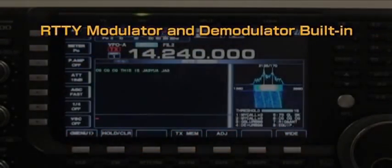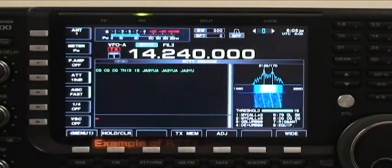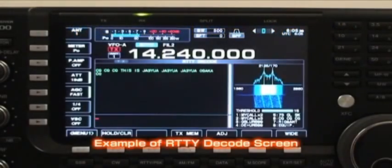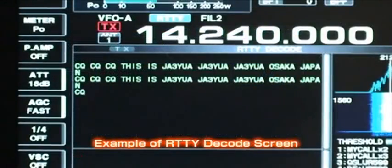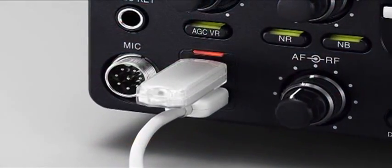The IC7700 has a built-in modulator and demodulator for RTTY and PSK31 modes. By simply connecting a USB keyboard, you can immediately get on with enjoying these modes.